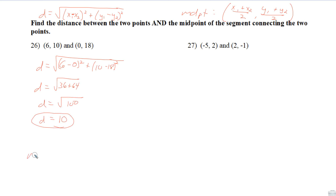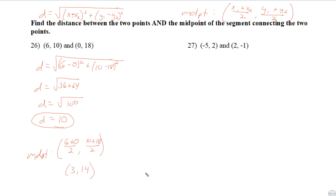It also asks us to find the midpoint. The midpoint is the average: (6 + 0)/2 for x and (10 + 18)/2 for y. That gives x = 3 and y = 28/2 = 14. We could also just think of it as halfway between 6 and 0 is 3, and halfway between 10 and 18 is 14.